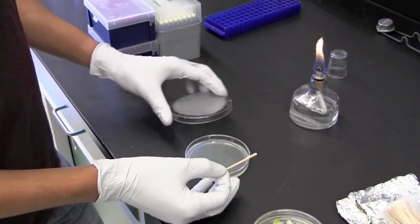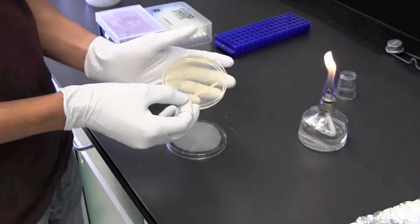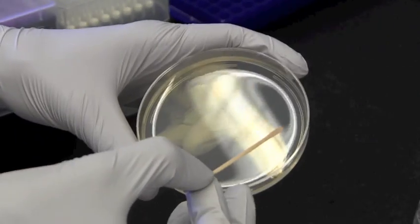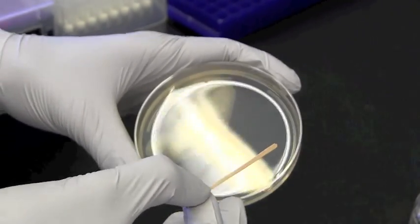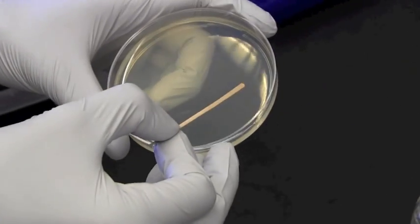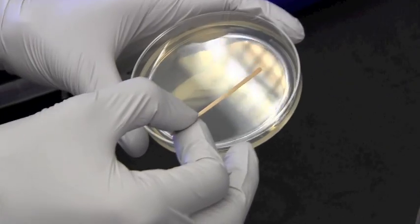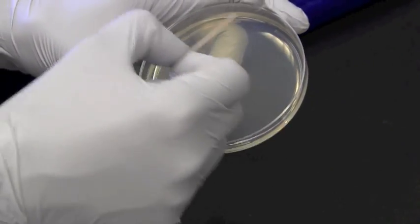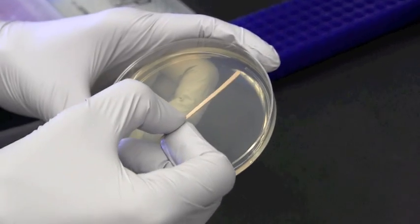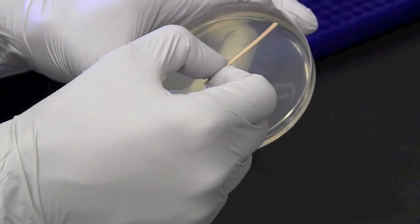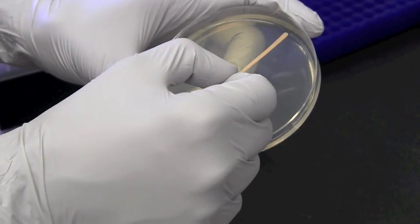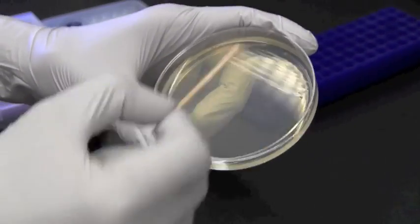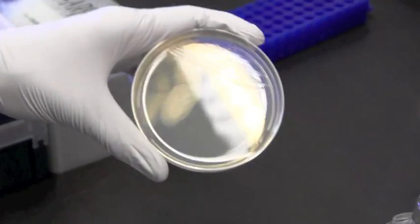So now we're going to pick up the plate slightly tilted and do our first streak out which is going to be the most concentrated smear of cells. What we're going to do is just scrape it onto the plate going back and forth in non-overlapping zigzag lines. And that's enough for our first streak.